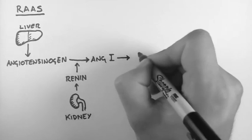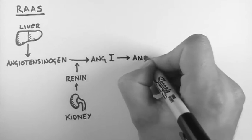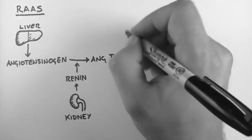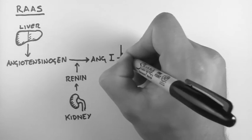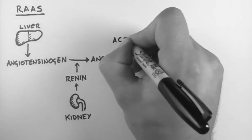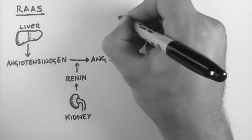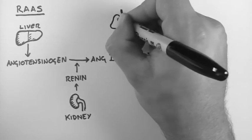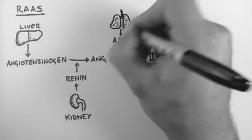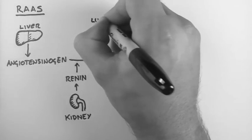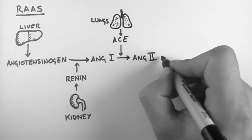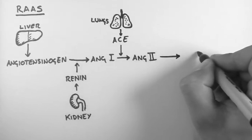Angiotensin 1 gets converted to angiotensin 2 by an enzyme called angiotensin converting enzyme, or ACE. These angiotensins are floating around in the blood, and it's when they pass through the lungs that they meet ACE, which lives in the lung — that's when angiotensin 1 gets converted to angiotensin 2.